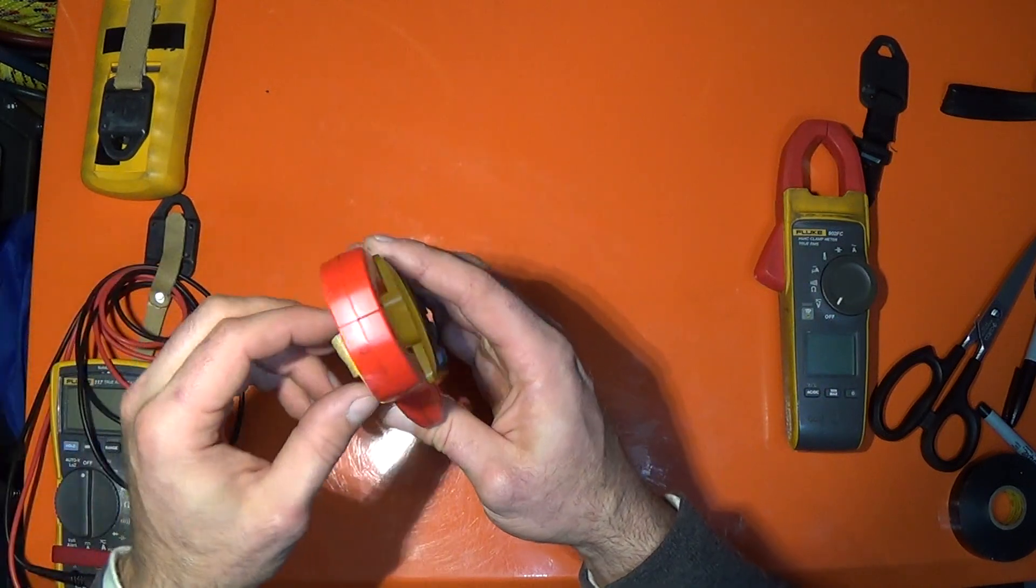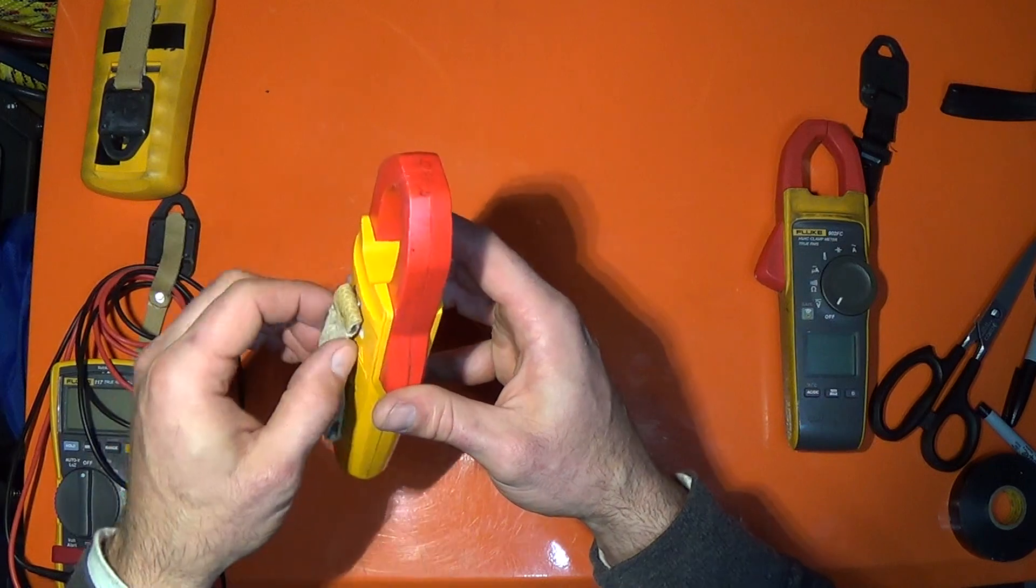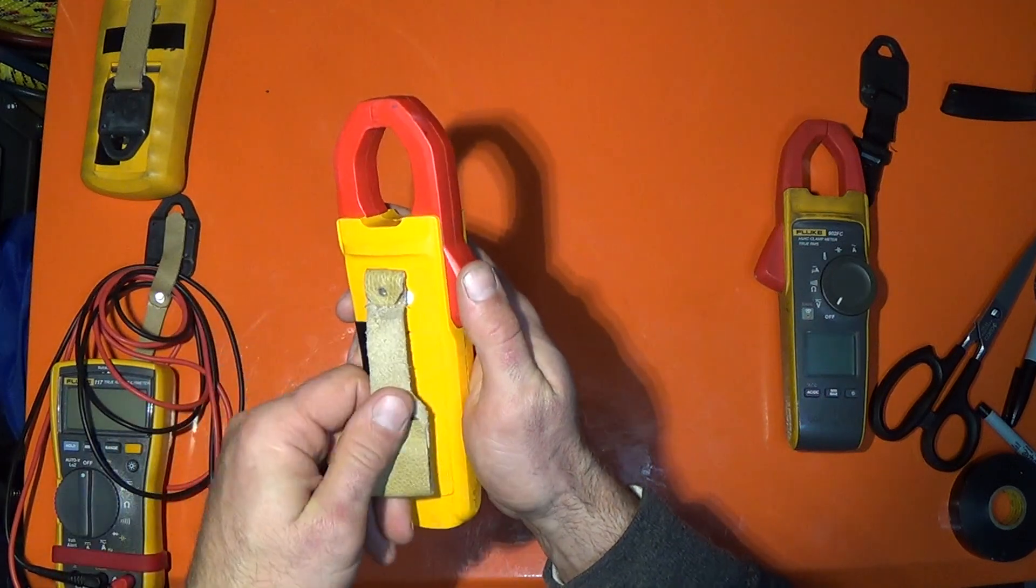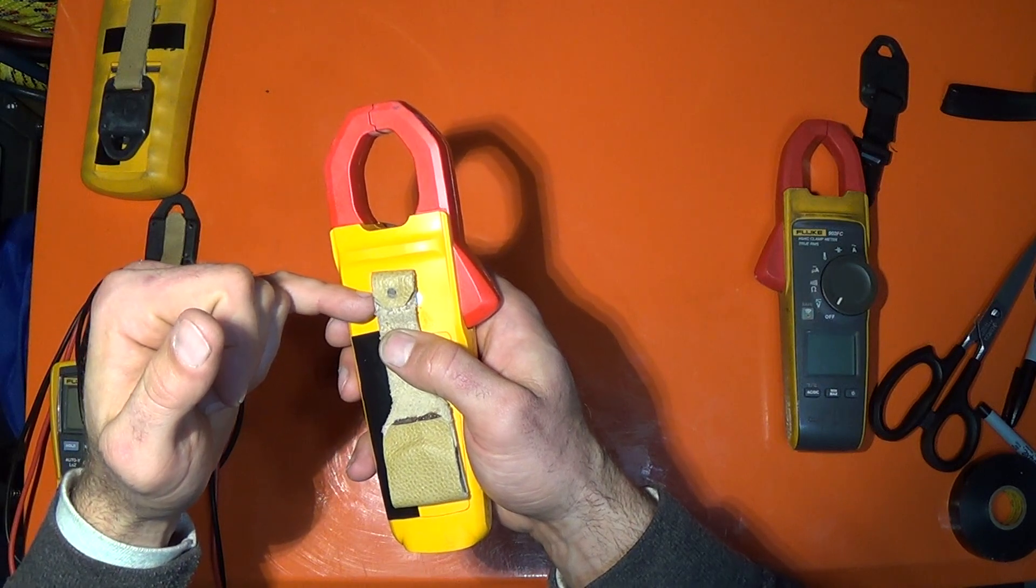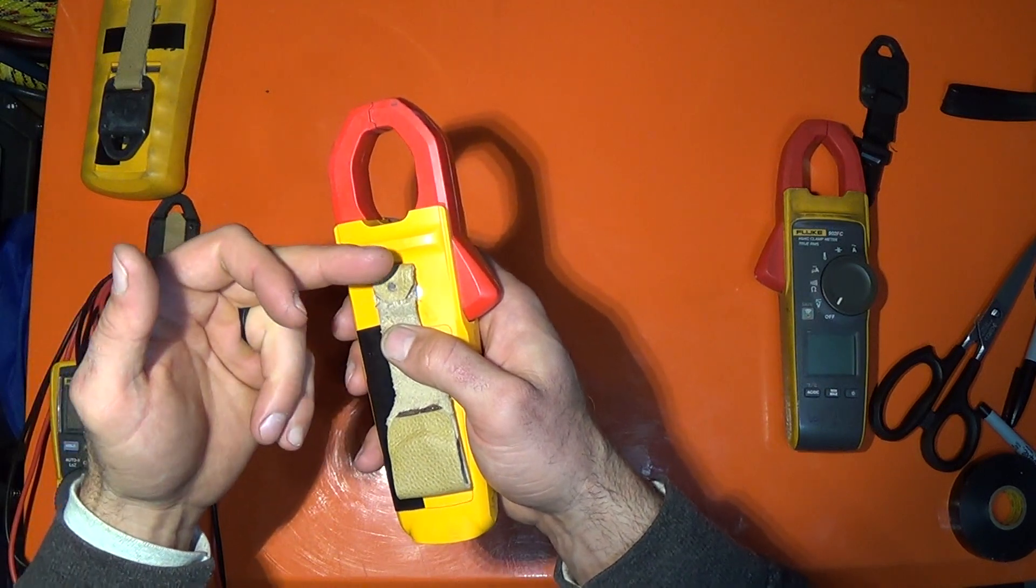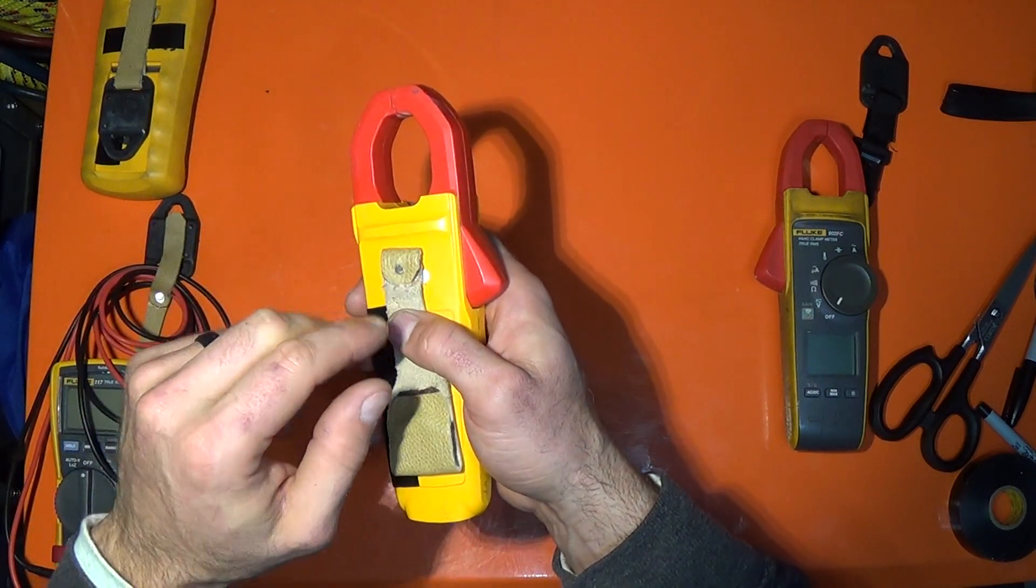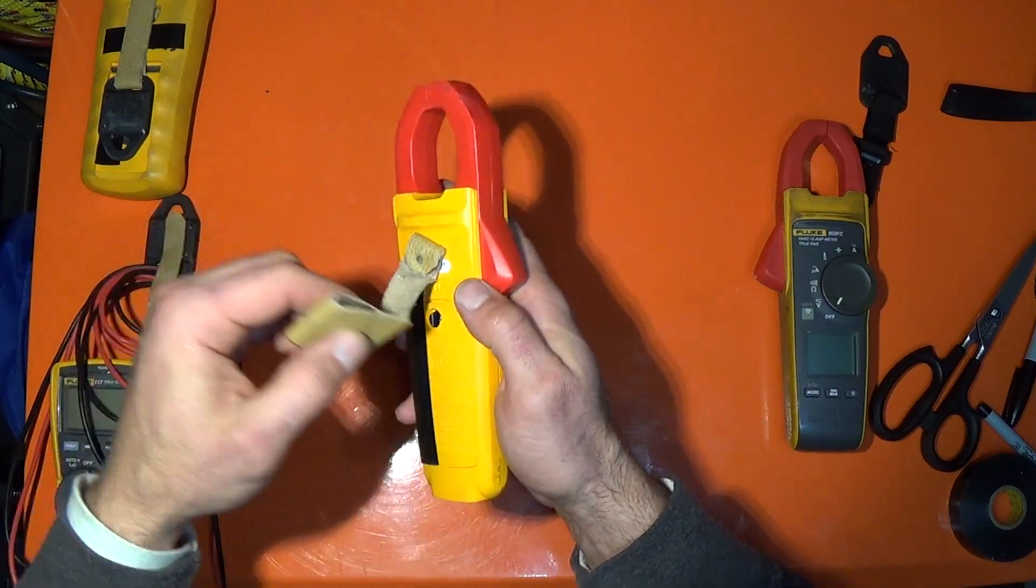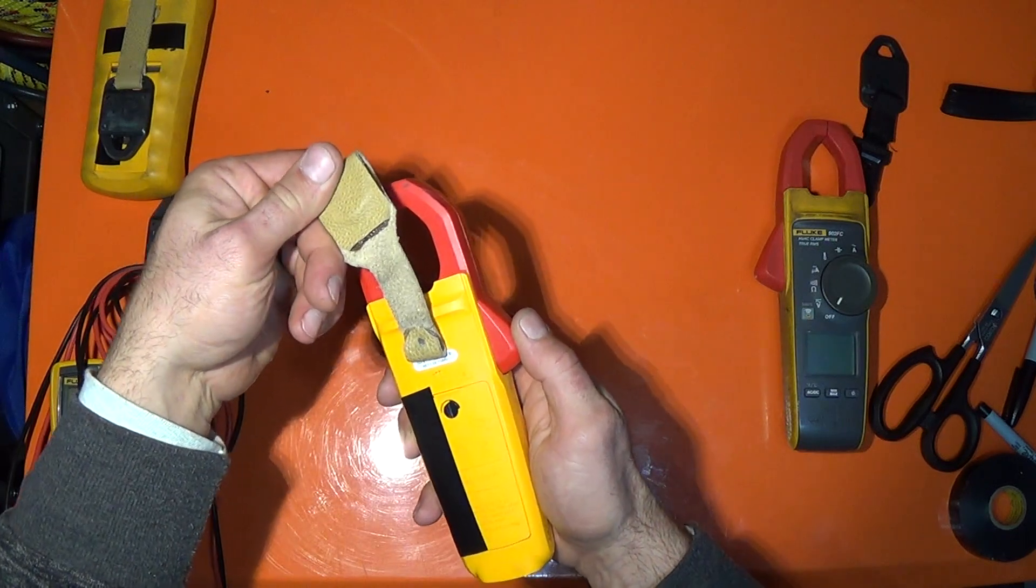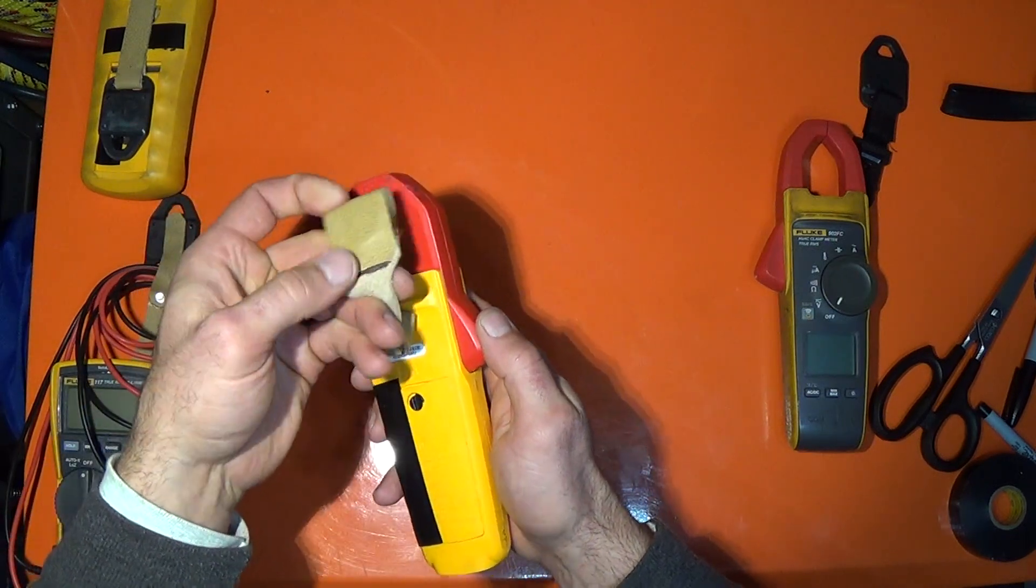some holes for your leather. I would probably fold it over that way you don't have a piece of metal exposed on the back of your meter that might short something out. That's how that one works.